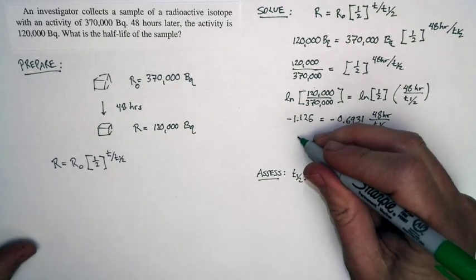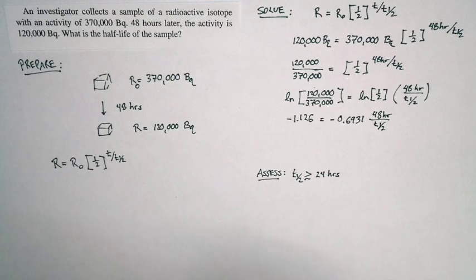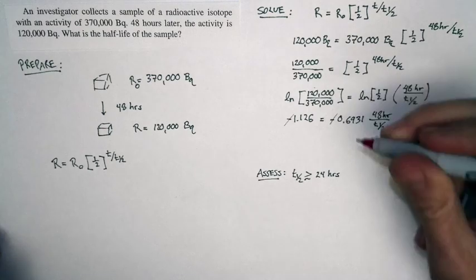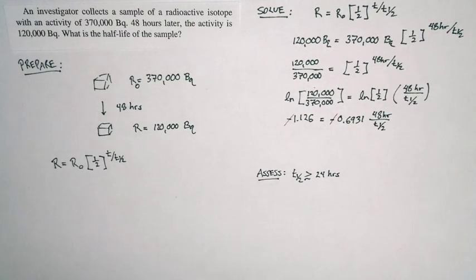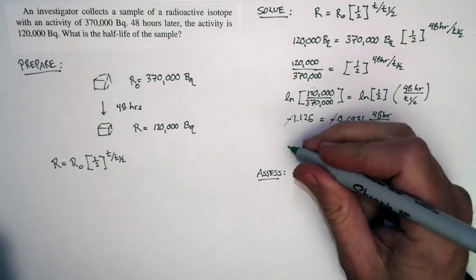The only thing I don't know in this expression is t₁/₂. Now notice this. The negative signs cancel as they must. So this goes away. And then I'm left with an expression where everything's positive. The only thing I don't know is t₁/₂.